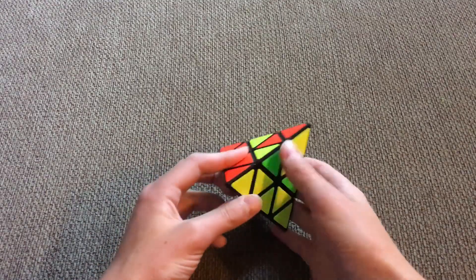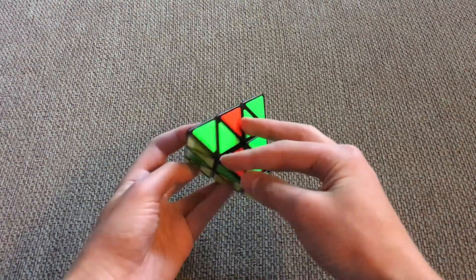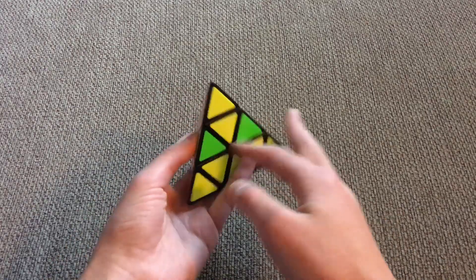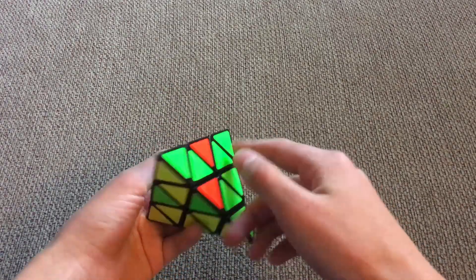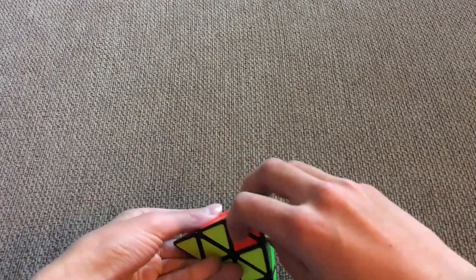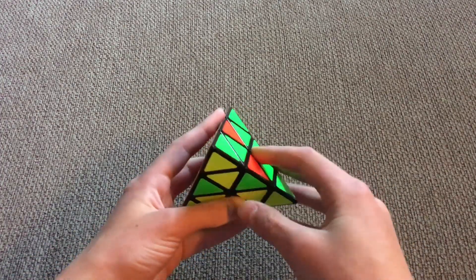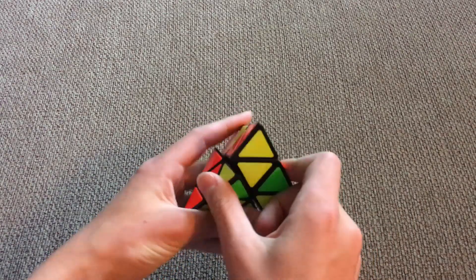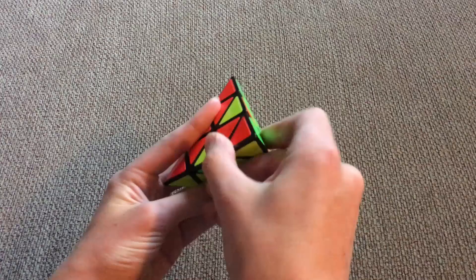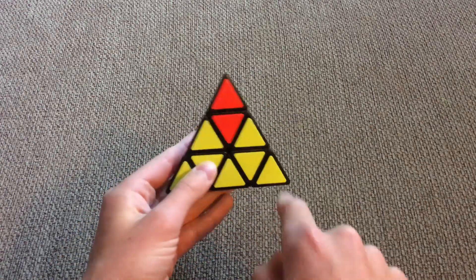Now, if you have this case where all of these are matched up but they're different colors, like they're not aligned to the right color, then you need to turn the top face to see which way it needs to go. So if it needs to go to the left to match it up, when you turn it from the top, you see it turned to the left to match up the colors.